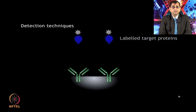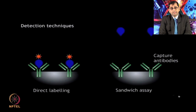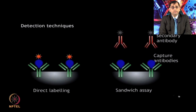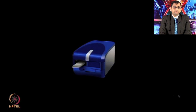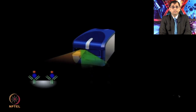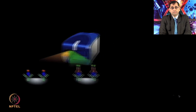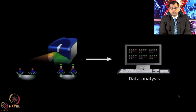For protein detection and analysis, in the direct labeling detection technique all target proteins are labeled with a fluorescent or radioactive tag that facilitates easy detection upon binding to the immobilized capture antibody. In the sandwich assay, a fluorescent-tagged secondary antibody that recognizes a different epitope on the target antigen binds to it and is detected by fluorescence. The protein microarray is then scanned in a microarray scanner that detects fluorescently labeled proteins or antibodies, and the output is received by appropriate software for data analysis.